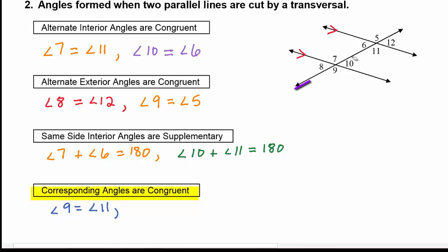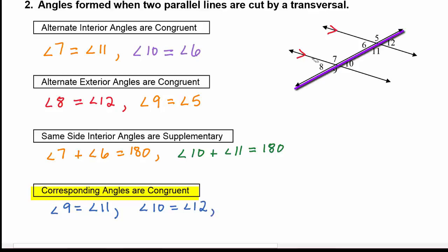Angle 10 is in the lower right, so its corresponding angle is angle 12 — those are equal. Angle 8 is in the upper left, and the upper left at the other intersection is angle 6, so they're equal. Finally, the upper right angles: angle 7 and angle 5 are equal.